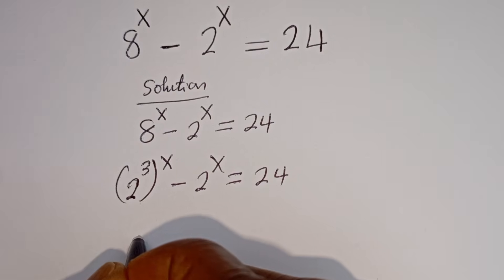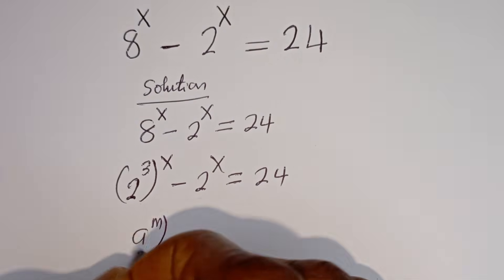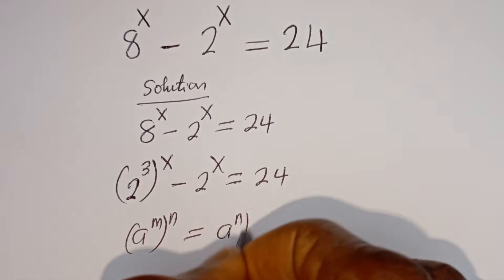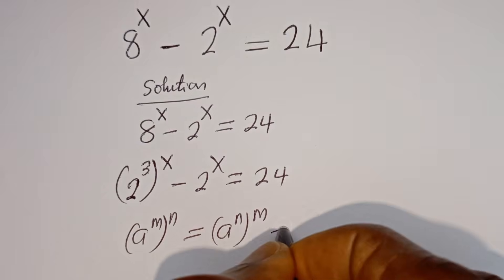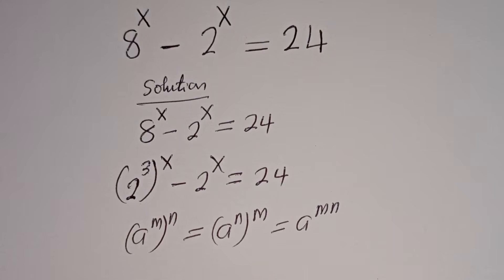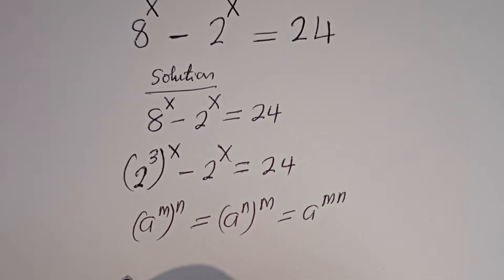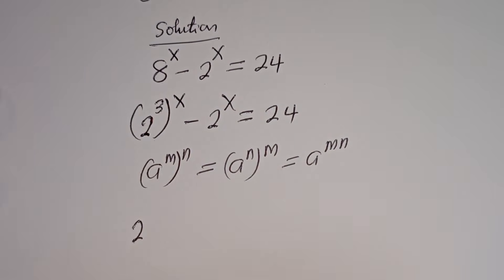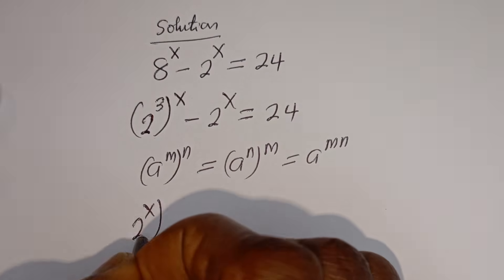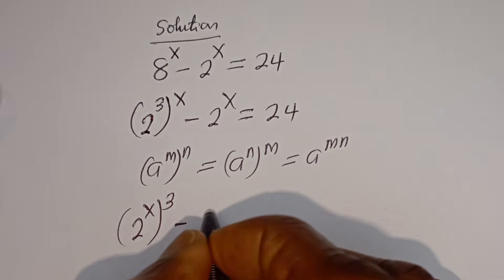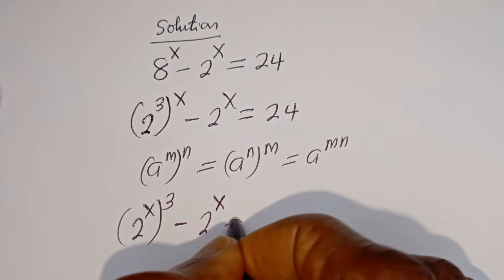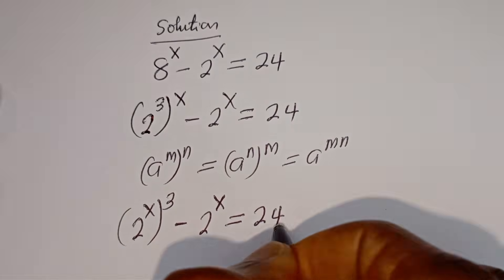Take note that if you have 8 to the power of m to the power of n, this is equal to 8 to the power of n to the power of m, which is equal to 8 to the power of m·n. Then, this can be written as 2 to the power of x, to the power of 3, minus 2 to the power of x, is equal to 24.